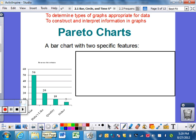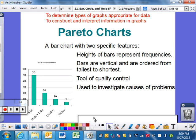All right. A Pareto chart. This is a bar graph, but what's different about it? It has two specific features behind it. The heights of the bars represents frequencies. Nothing too different about that. But the bars are vertical, and they are ordered from tallest to shortest. So if you look over here at this bar, make sure it is tallest to shortest in that order.